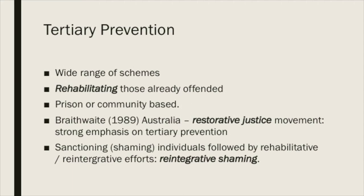Tertiary prevention involves a wider range of schemes, but basically it's about rehabilitating those who've already offended. You could relate this to the welfarist approach for those studying juvenile crime and justice. These programs can be prison or community-based, and in the Australian context it's strongly emphasised by the restorative justice movement. Reintegrative shaming presents as an example of tertiary prevention — shaming or sanctioning individuals who've committed an offence, followed by efforts to rehabilitate and reintegrate them into society.